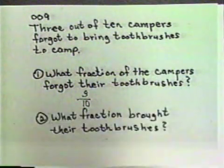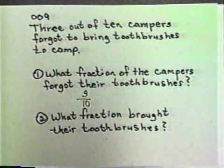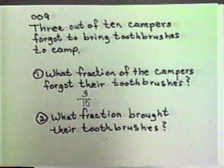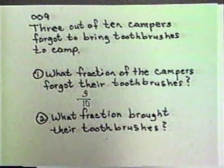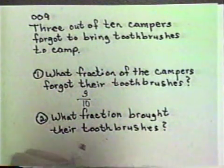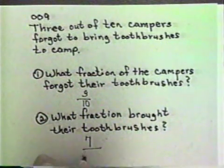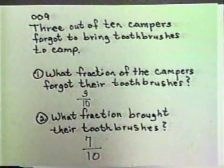Now let's answer another question: what fraction brought their toothbrushes? Well, if three out of the ten forgot their toothbrushes, then everybody else brought them. If there were only ten campers and three of them forgot them, that leaves seven of them that had to bring them. Seven out of the ten brought their toothbrushes.